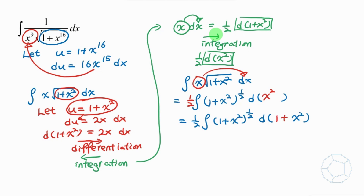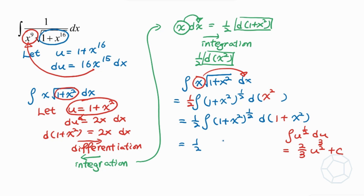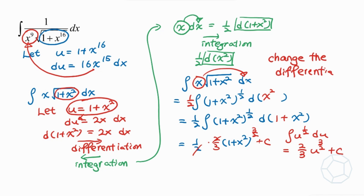So, integrate x times square root of 1 plus x squared dx. We absorb the x inside the differential. The integrand becomes 1 plus x squared to the power one-half, and the differential gives one-half d(x squared). We can add any constant inside the differential because differentiation of a constant is 0. This form is then integrate u to the power one-half du, which equals u to the power 3 over 2 divided by 3 over 2, giving one-half times (1 plus x squared) to the 3 over 2 times 2 over 3 plus c. The two's cancel to give the final answer.